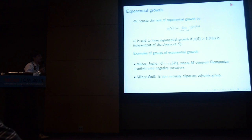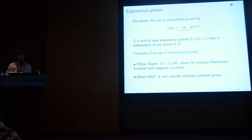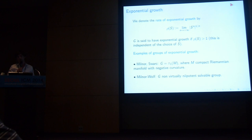Examples of groups with exponential growth go back to geometry: Milnor and Schwarz in the 1960s realized that if you have a group acting on a manifold with negative sectional curvature, then it has this property. Milnor and Wolf also showed in the 60s that if a group is solvable, then it has exponential growth unless it is virtually nilpotent. 'Virtually' means there is a finite index subgroup with that property.